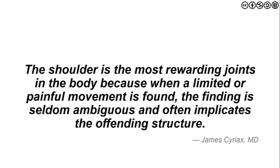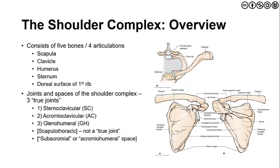As we look at anatomy, kinesiology, and biomechanics, keep that concept in mind. We'll start by looking at the shoulder complex as an overview. There are really five bones to be aware of with four articulations — three true joints as well as two false joints or spaces. The main bones are the scapula, the clavicle, the humerus, the sternum, and the dorsal surface of the first rib.